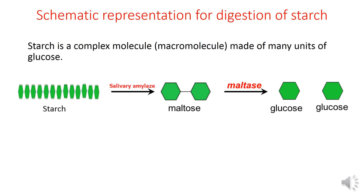This is a schematic representation for the digestion of starch. Starch is a complex molecule made up of many units of glucose. Each unit of glucose is linked in a chain. In the presence of salivary amylase, the enzyme digests starch into maltose — this is the action of salivary amylase.